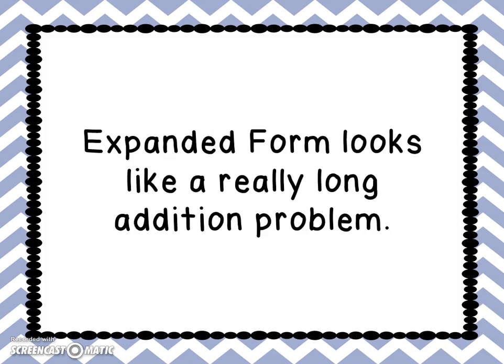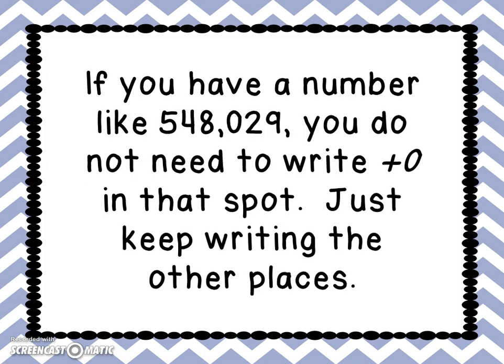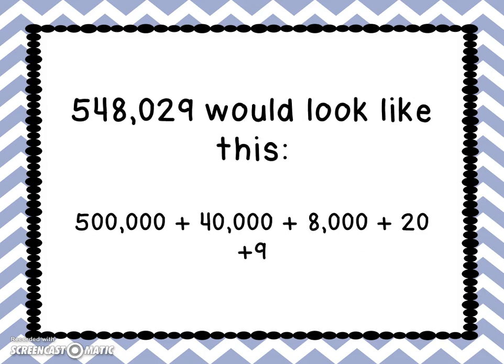Expanded form looks like a really long addition problem. One thing we need to be careful of is when a number has a 0 in it. If you have a number like 548,029, you do not need to write plus 0 in that spot — just keep writing the other places. So you would write it as 500,000 plus 40,000 plus 8,000 plus 20 plus 9.